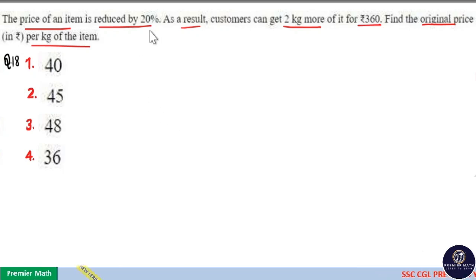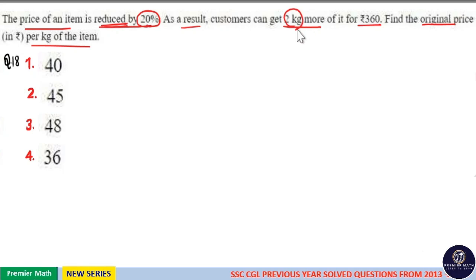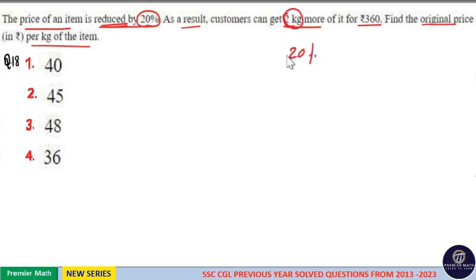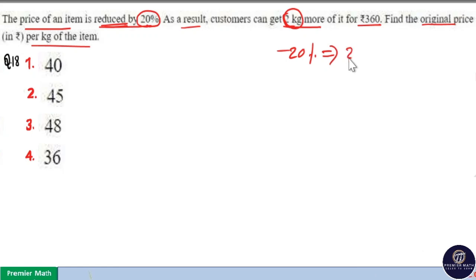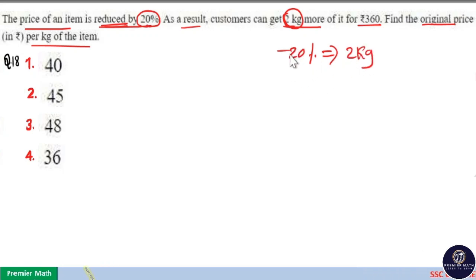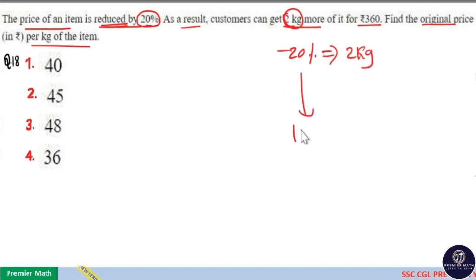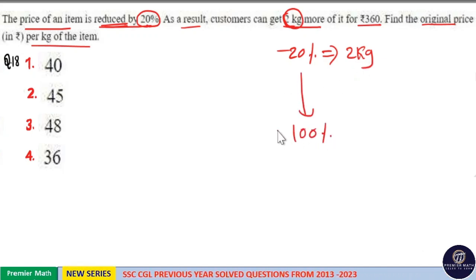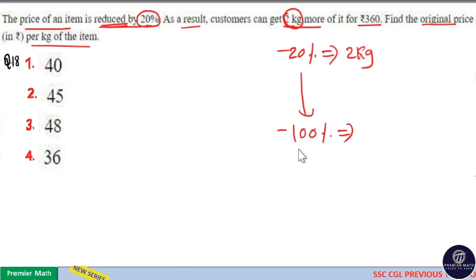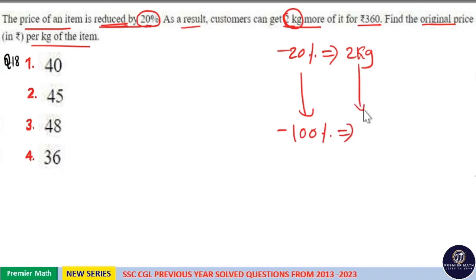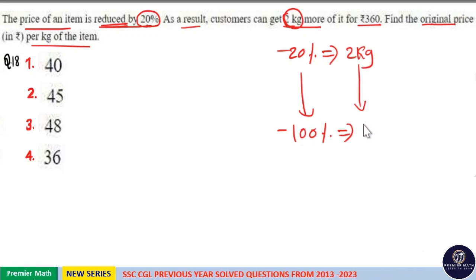Here we have a short read: this 20% reduction leads to 2 kilogram additional amount. So, 20% reduction leads to 2 kilogram additional amount. Then, 10% reduction leads to 1 kilogram additional amount. If I find 100% reduction, then 100% reduction leads to — 20 into 5 is 100 — 2 into 5 is 10 kilogram.